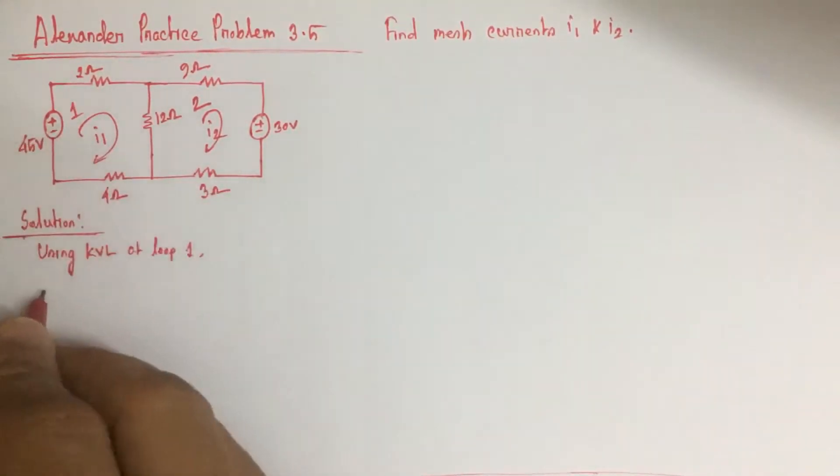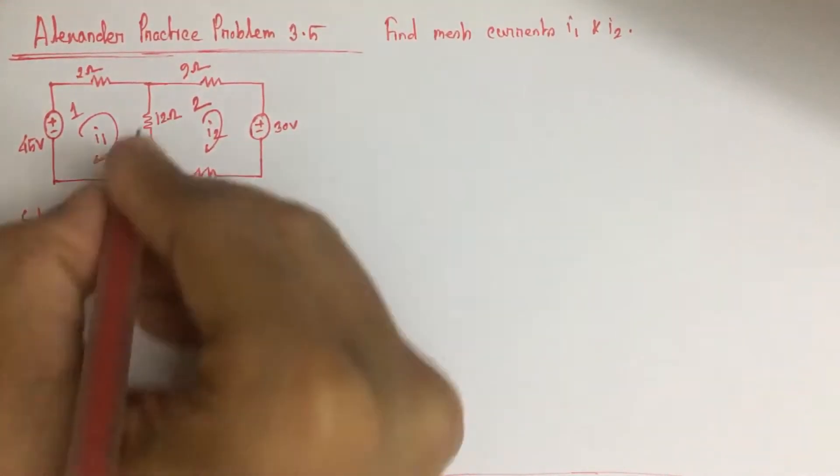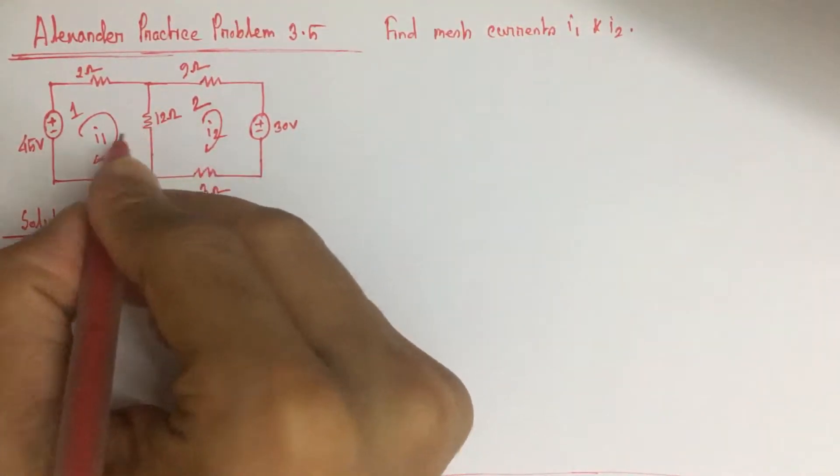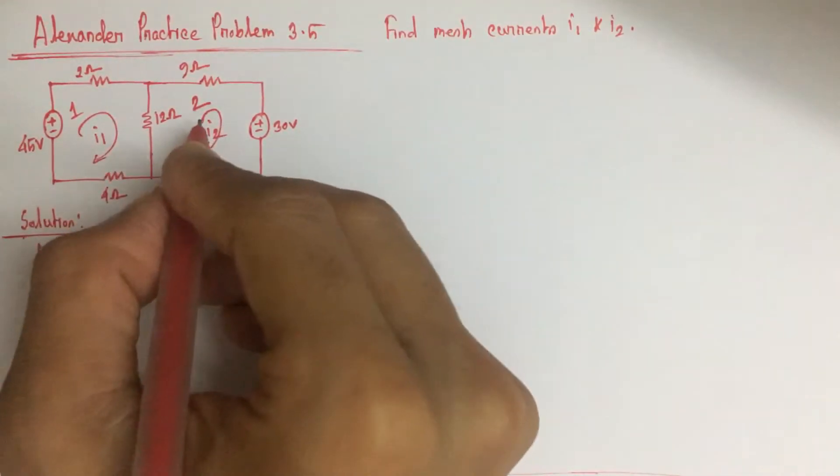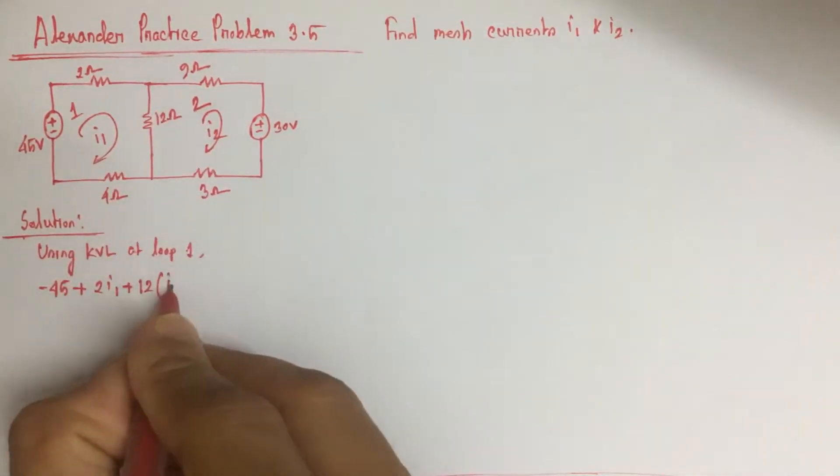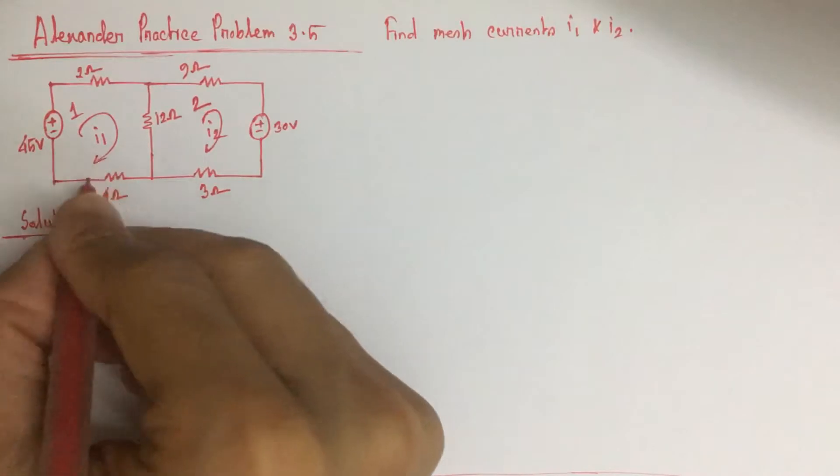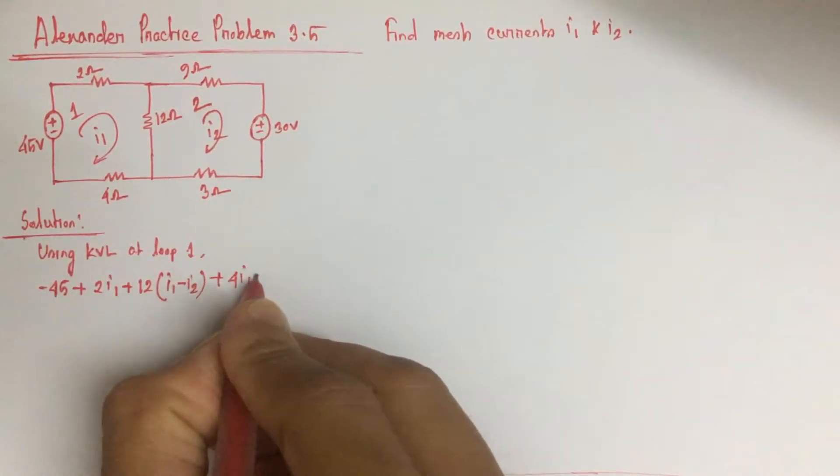we will get minus 45 plus 2I1, plus 12. Here through this 12 ohm resistance I1 is going downward and I2 is flowing upward. So this will be I1 minus I2 plus 4I1 equals 0.